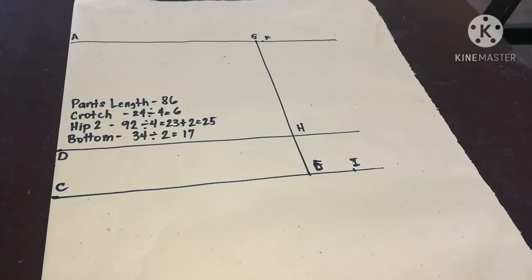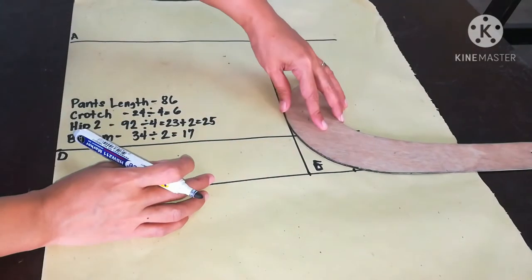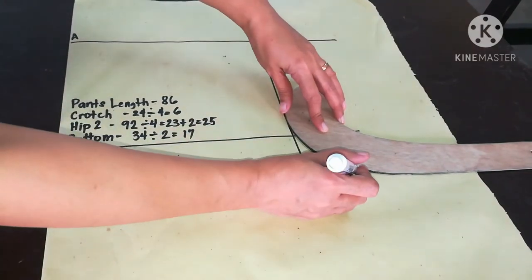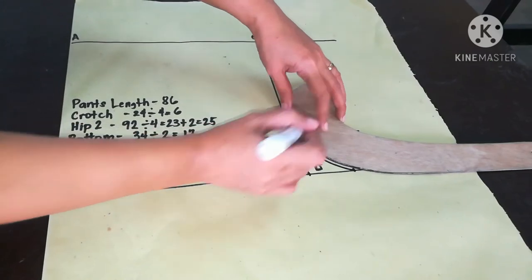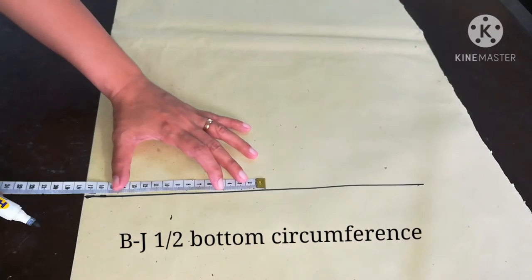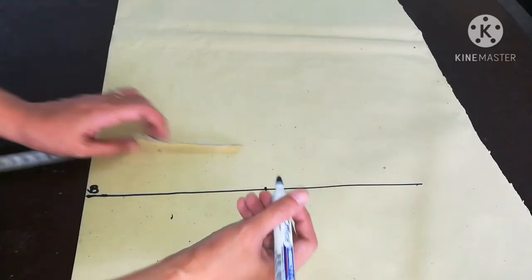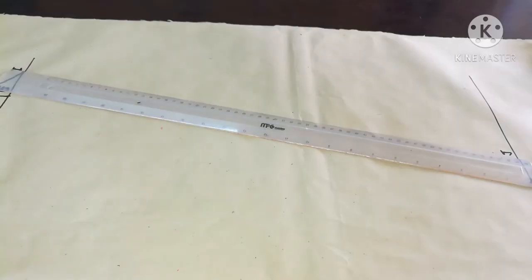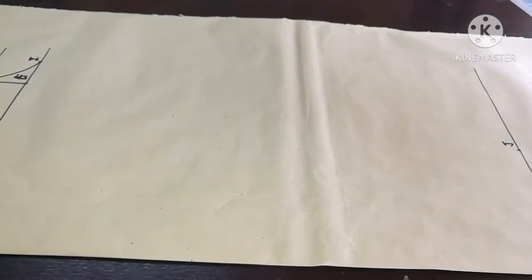And then connect H and I with the use of French curve. B to J is 1/2 bottom circumference. Mark it point J. And then connect I and J with straight edge, or with hip curve if you want the inseam a little bit tapered on the thigh.